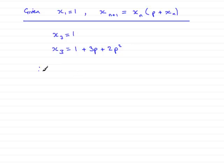So I'll write that in: 1 plus 3p plus 2p squared equals 1. Now if I subtract 1 from both sides, we have 3p plus 2p squared equals 0.